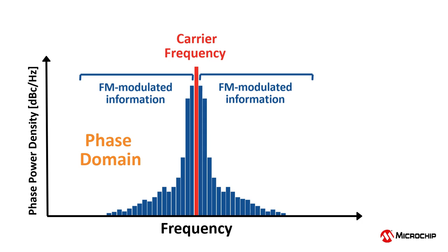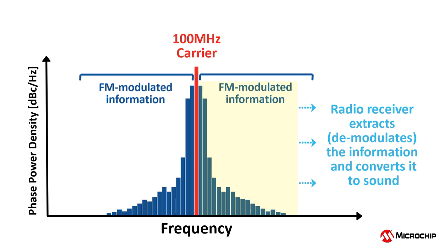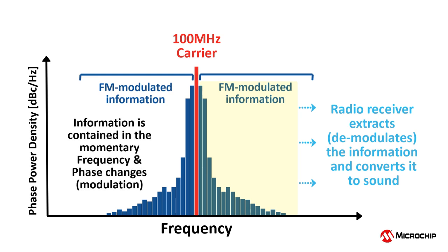We will use 100 megahertz as an example. A 100 megahertz FM radio clock is the carrier, and its frequency is modulated in such a way that a receiver in your radio can extract the information added onto the carrier via frequency modulation. The 100 megahertz clock is the workhorse — it carries information. The information is contained in the way the frequency, and therefore the phase, changes slightly each moment in time.